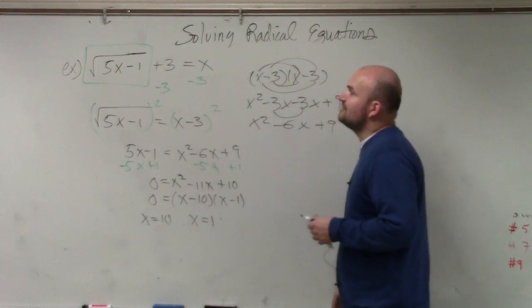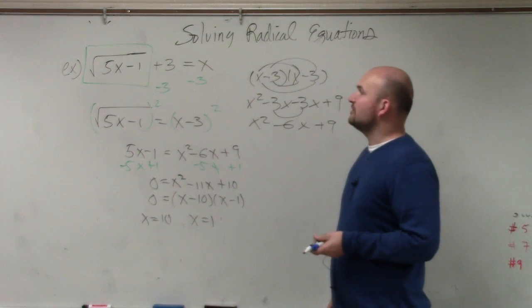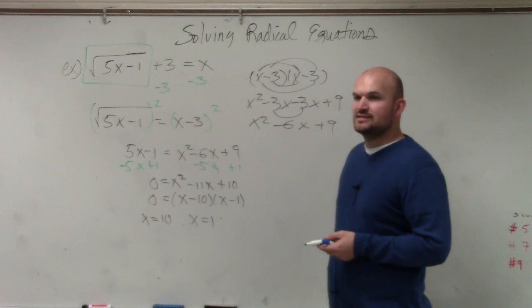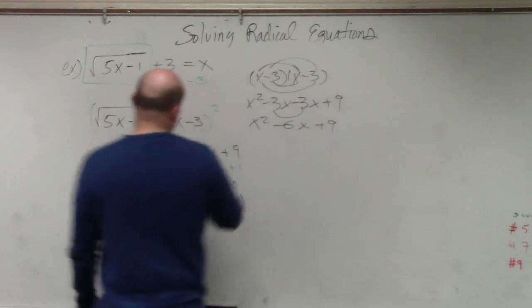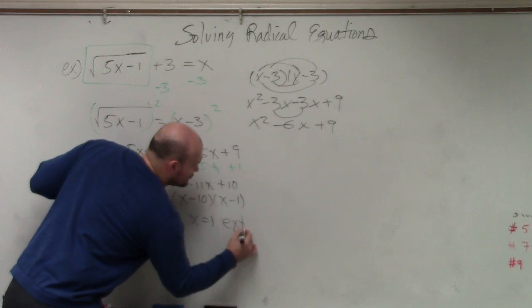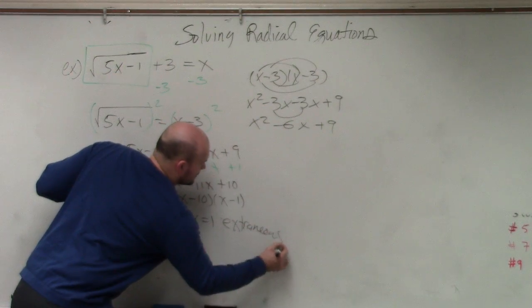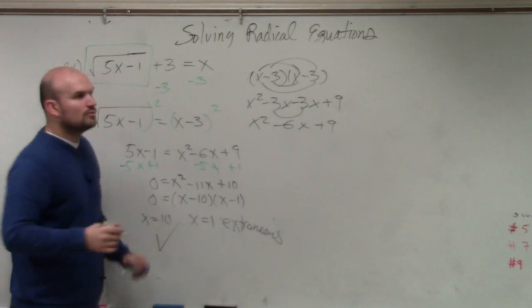Let's do 1. 5 times 1 is 5. Minus 1 is 4. Square root of 4 is 2. 2 plus 3 is 5. And I originally put in 1. Does 5 equal 1? No. Oh, so this is extraneous.